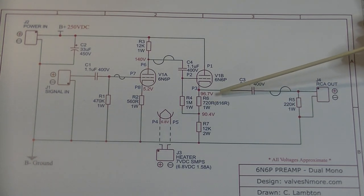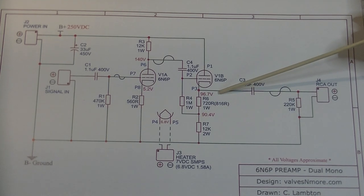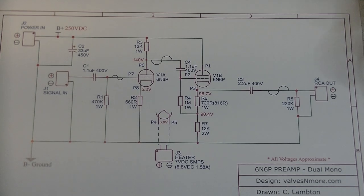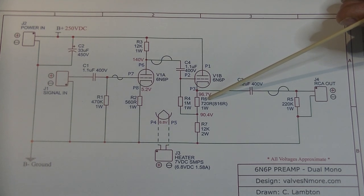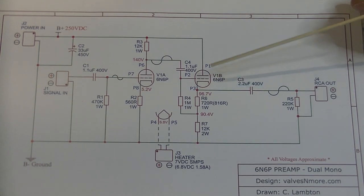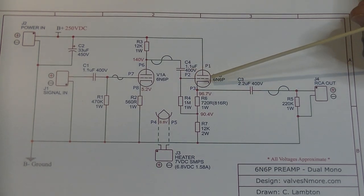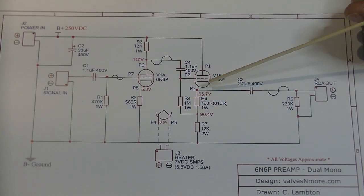Here we have what looks like a slightly complicated cathode bias arrangement. If you look at R6, you'll see we've got our cathode resistor. Here I've marked 816R because I didn't have a 720. 720s are on the way in, but the difference in bias is fairly minor.